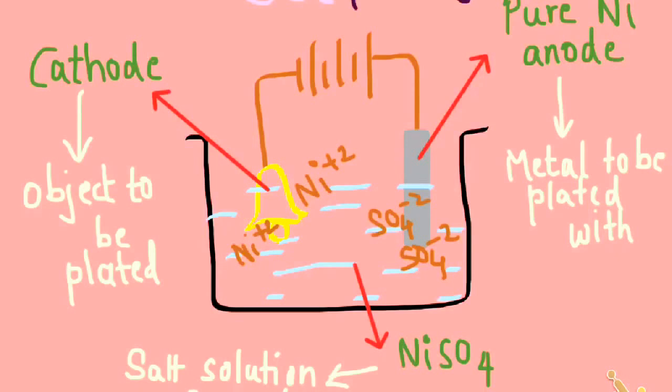On the other side, in the anode, the nickel reacts with the sulfate ions and this creates NiSO4 or nickel sulfate which gets back to the electrolyte. And this again forms ions and the process goes on.